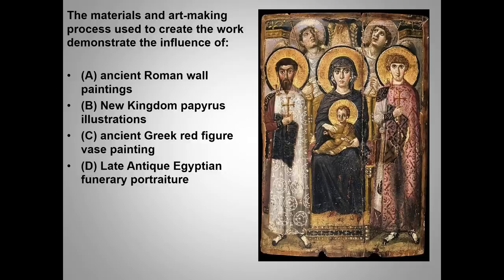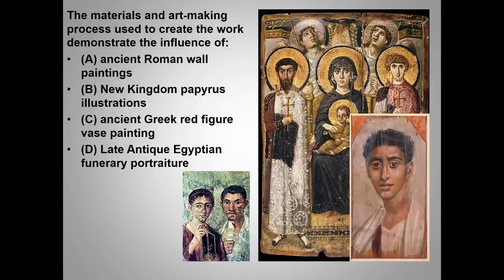I actually complained about this question on the AP Art History Teacher Discussion Board, and other teachers echoed my complaint. The correct answer is late antique Egyptian funerary portraiture — these two were painted in encaustic on wood, and you'll notice a similarity in facial features and composition. I complain because there's no Egyptian funerary portraiture on the College Board list. The best clue to the answer is probably the icon's location: the Monastery of St. Catherine in Mount Sinai, Egypt. The figures also somewhat resemble Roman wall painting — there's an example from Pompeii on the bottom left — but those are fresco, not encaustic.